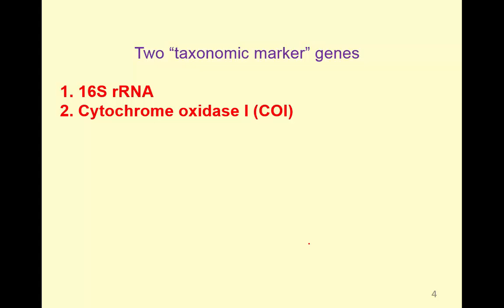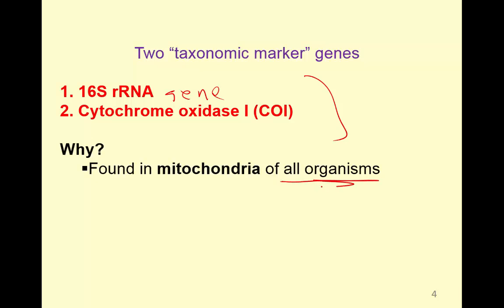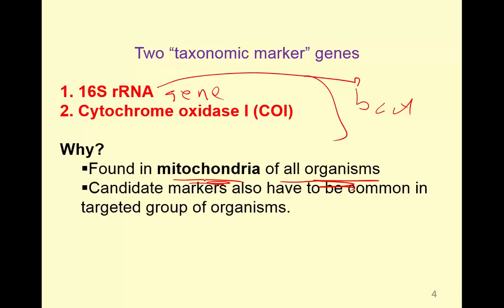Why do we use these genes? Because they're found in all organisms. The 16S is associated with bacteria, but remember that the organelles of eukaryotes have DNA reflecting their endosymbiotic origin, so these markers are really looking at the mitochondria in these organisms. We'll talk later about genes found in chloroplasts, which are useful for looking at plants. The key criterion for calling something a taxonomic marker gene is that it must be found in all the organisms you're interested in — if it's not there, it's not going to be useful.